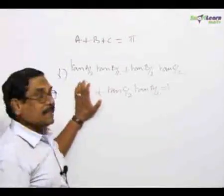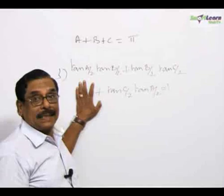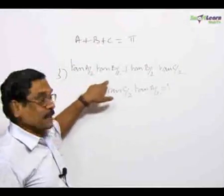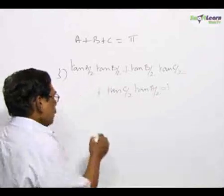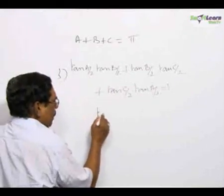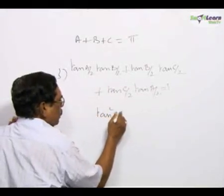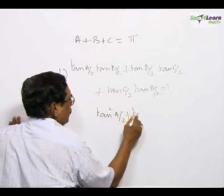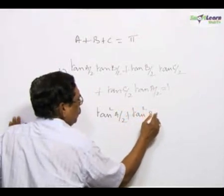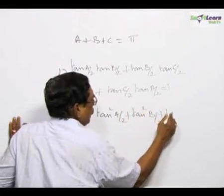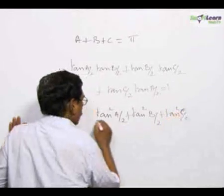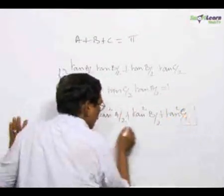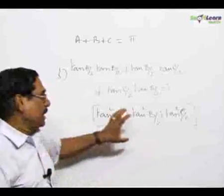Now, I will deal with the problem that was asked there which will involve the third concept here. You are asked to find out the minimum or the maximum value of tan squared A by 2 plus tan squared B by 2 plus tan squared C by 2.